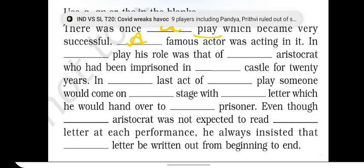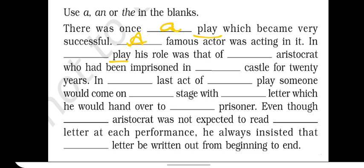His role was that of dash aristocrat. Aristocrat means a wealthy person and it is introduced here for the first time, so we use AN before it because 'aristocrat' begins with a vowel sound. A and AN mean the same thing — when something is introduced for the first time, we use A or AN before it.